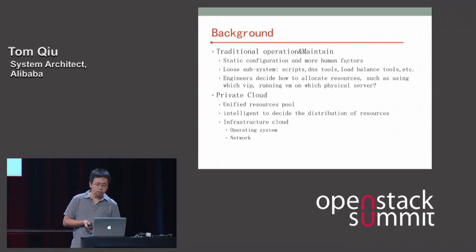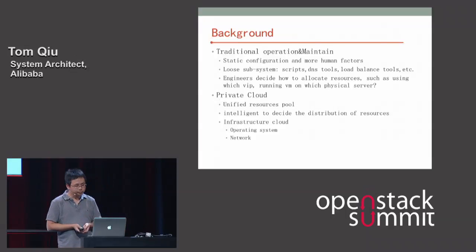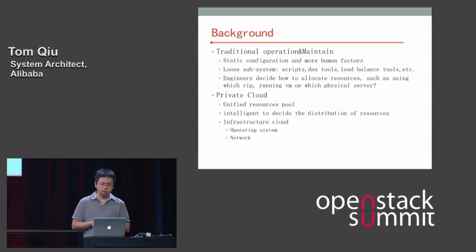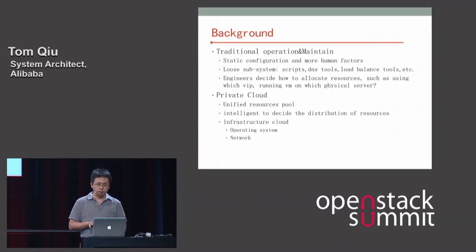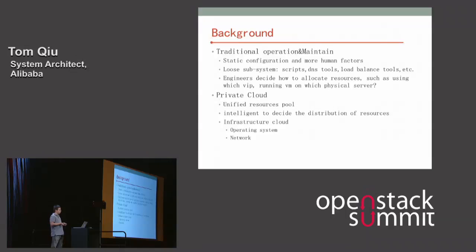The private cloud is different. It is also automated but more intelligent. The cloud maintains a unified resource pool and decides how to use these resources. Our private infrastructure cloud focuses on two areas: compute and network.